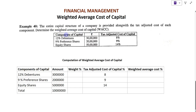The component of capital given: 12% debentures — 30 lakhs, with a tax adjusted cost of capital of 8%. 9% preference shares — 20 lakhs, tax adjusted cost 9%. Equity shares — 50 lakhs, with a tax adjusted cost of 14%.